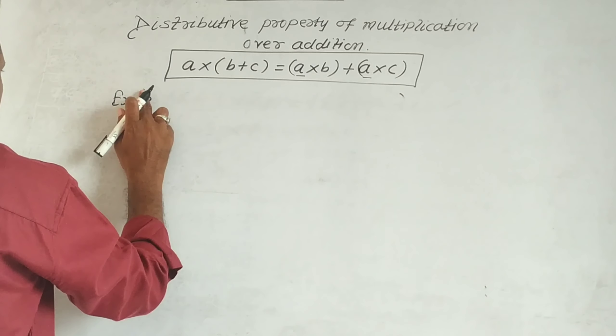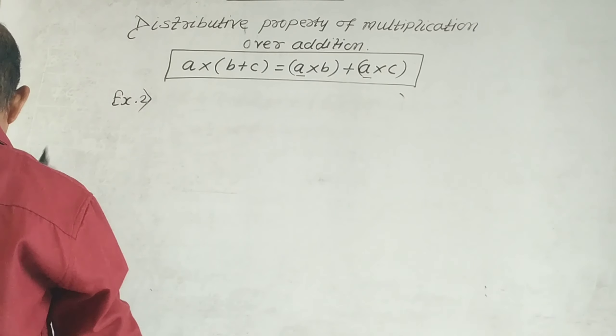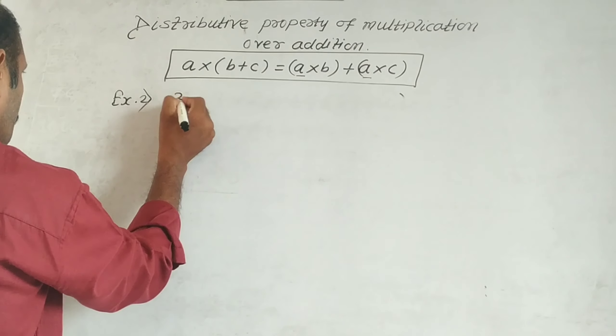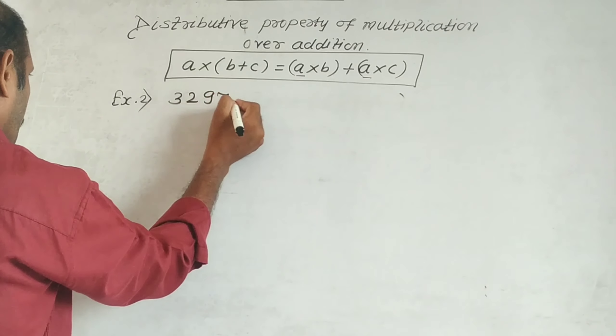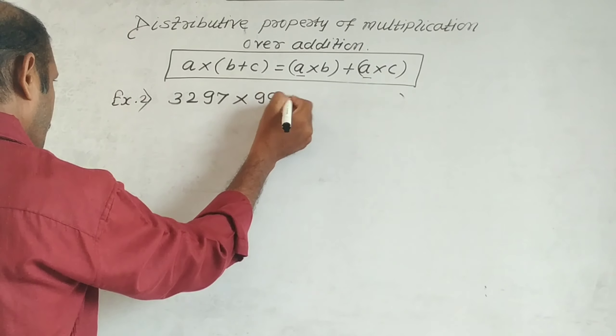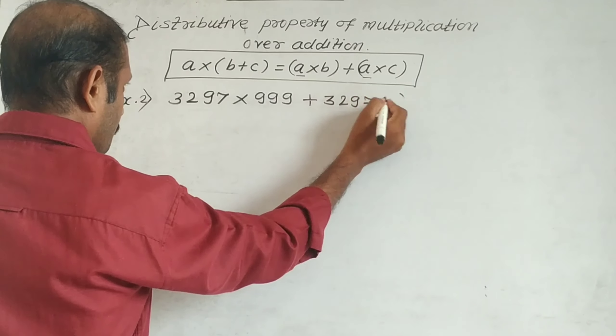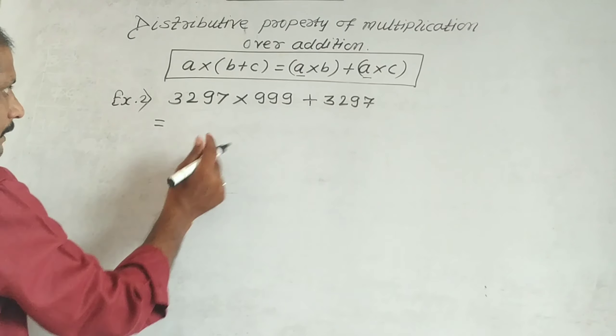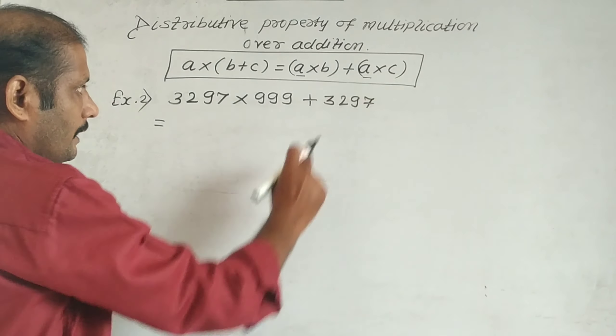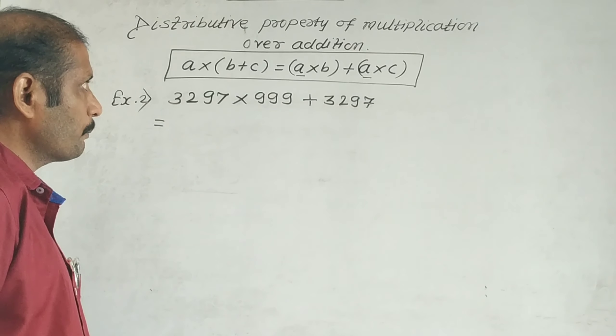Second example: (3297 × 999) + 3297. Students can do this by direct calculation, but we can use the property to make it easier.